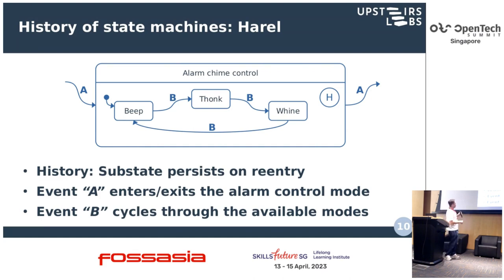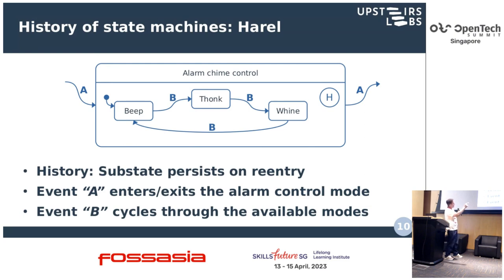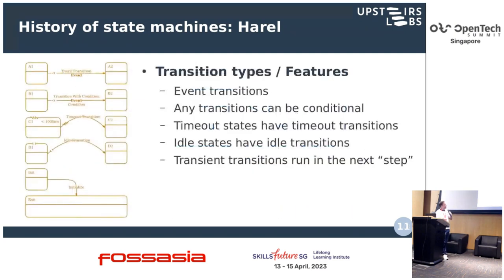History works like this: for example, you have one of those old watches where you press one button to cycle through different controls and another button to actually choose something. You press the A button and get into the alarm chime control state, press B and it changes your alarm chime, and when you leave the chime control state — because it is a history state — it will remember where you were the next time you enter it.